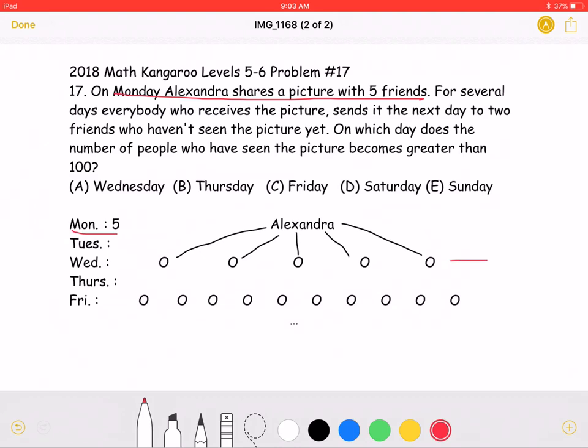And that would represent this row right here. It also says that everyone who receives the picture sends it the next day to two friends who haven't seen the picture yet.